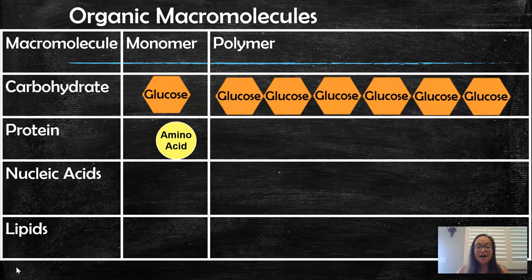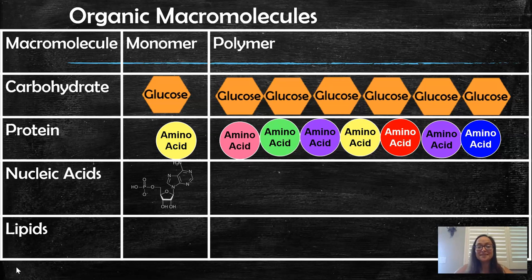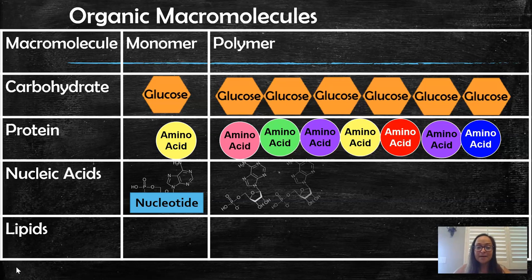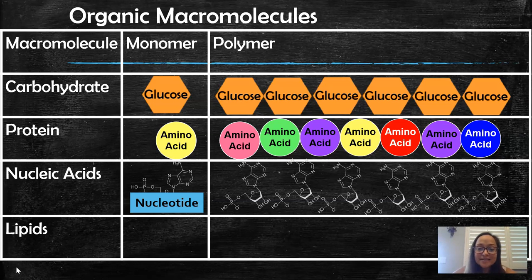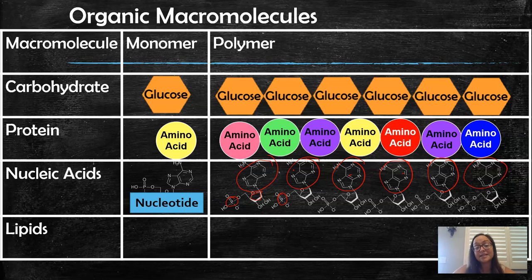For proteins, the monomer is an amino acid, and the polymer is a string of amino acids called a polypeptide. For nucleic acids, the monomer is a nucleotide — the A, T, C, and G in DNA, or A, U, C, and G in RNA each represent one of these. You can see the phosphorus in the nucleotide structure, along with the carbon ring, oxygen, and hydrogen. DNA and RNA have C, H, O, N, and P, and are chains of repeating nucleotides. This single-stranded example would be RNA, while DNA would be two strands.